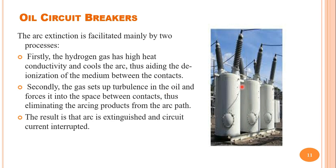In an oil circuit breaker, there is a chamber filled with oil and the moving contact and fixed contacts are placed in the chamber. When the moving contact is separated from the fixed contact, the arc is formed between the contacts in the oil present in the tank. When the oil is heated up, hydrogen gas is produced in the tank. The hydrogen gas has high heat conductivity and cools the arc, aiding the deionization of the medium between the contacts and helping arc extinction.